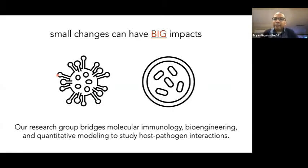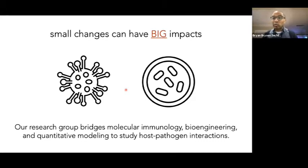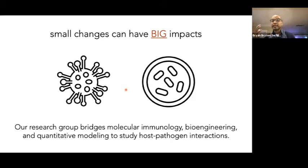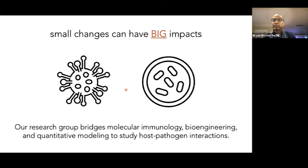Another theme of my talk is that small changes can have big impacts. We can think about a viral pathogen or mycobacterium tuberculosis, which is about two microns long, and yet these pathogens have been a scourge on human history. Tuberculosis is one of human history's top ten killers of all time. My research group bridges approaches in molecular immunology, bioengineering, and quantitative modeling to study these host-pathogen interactions.